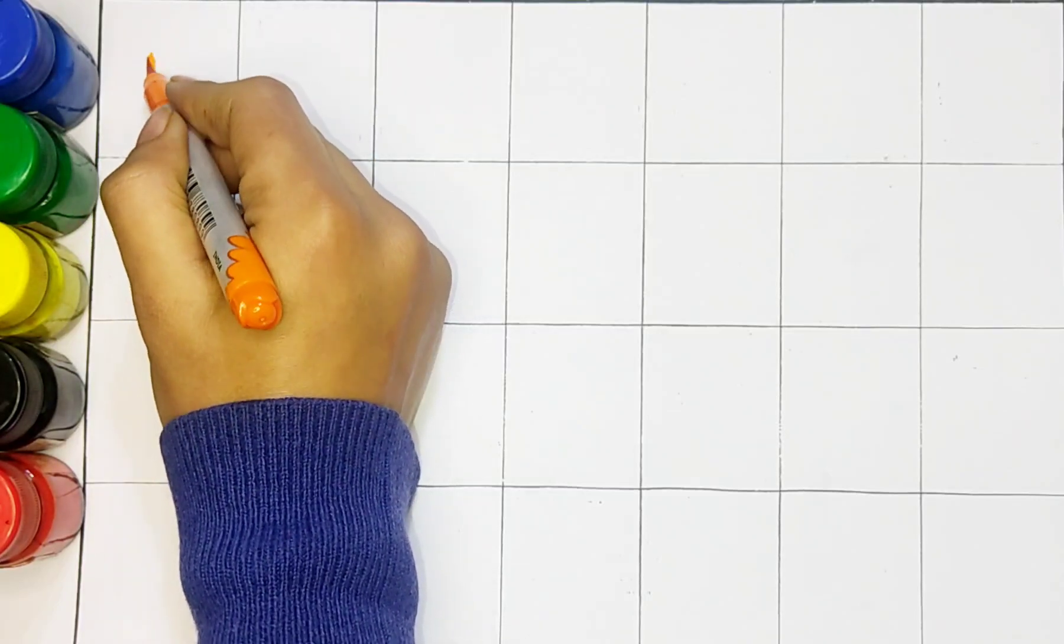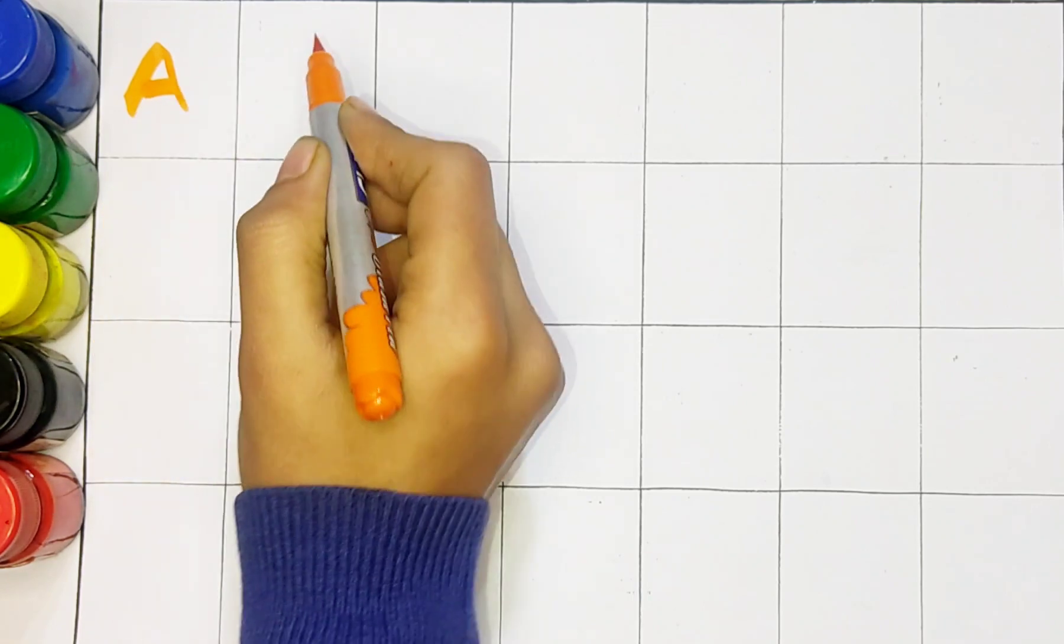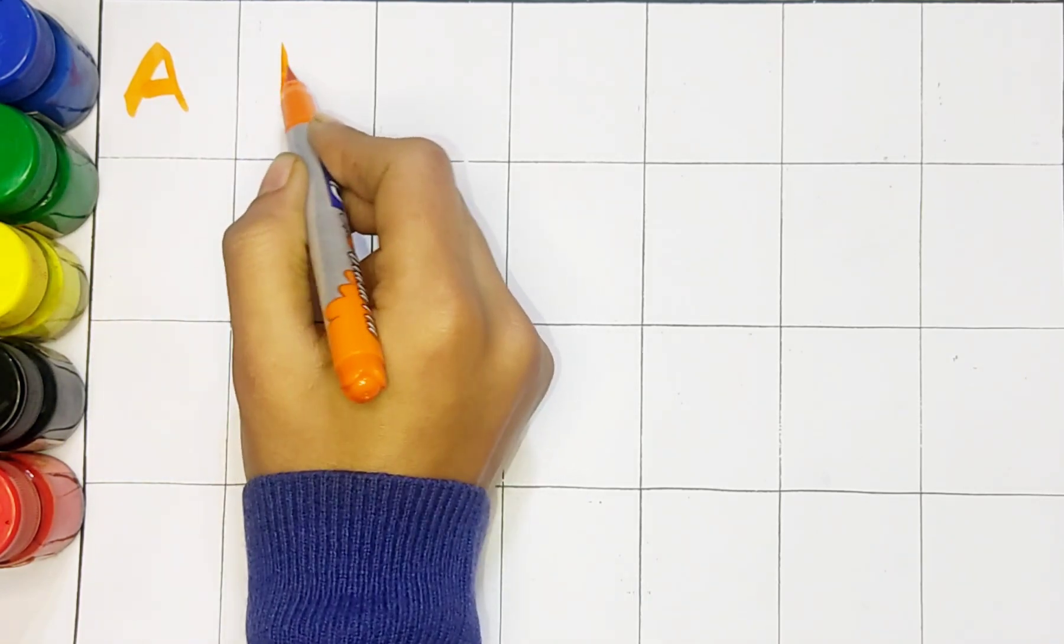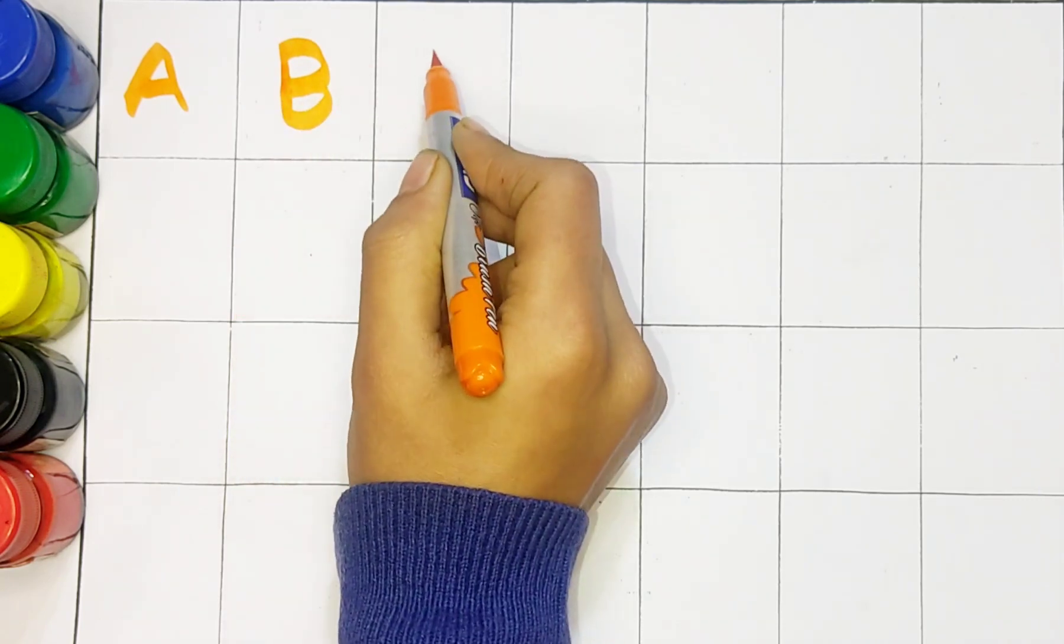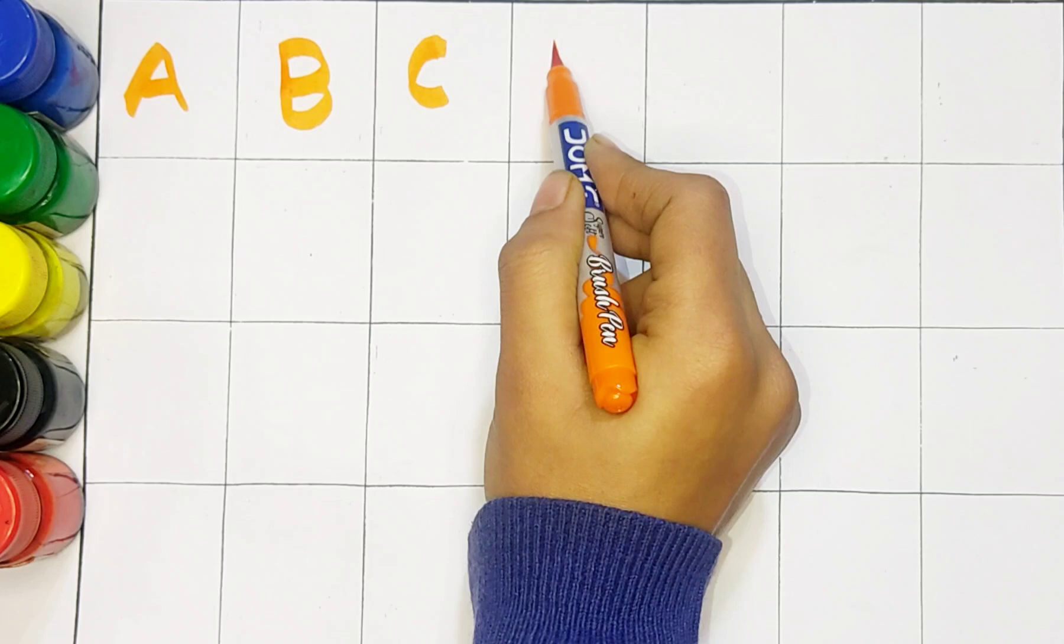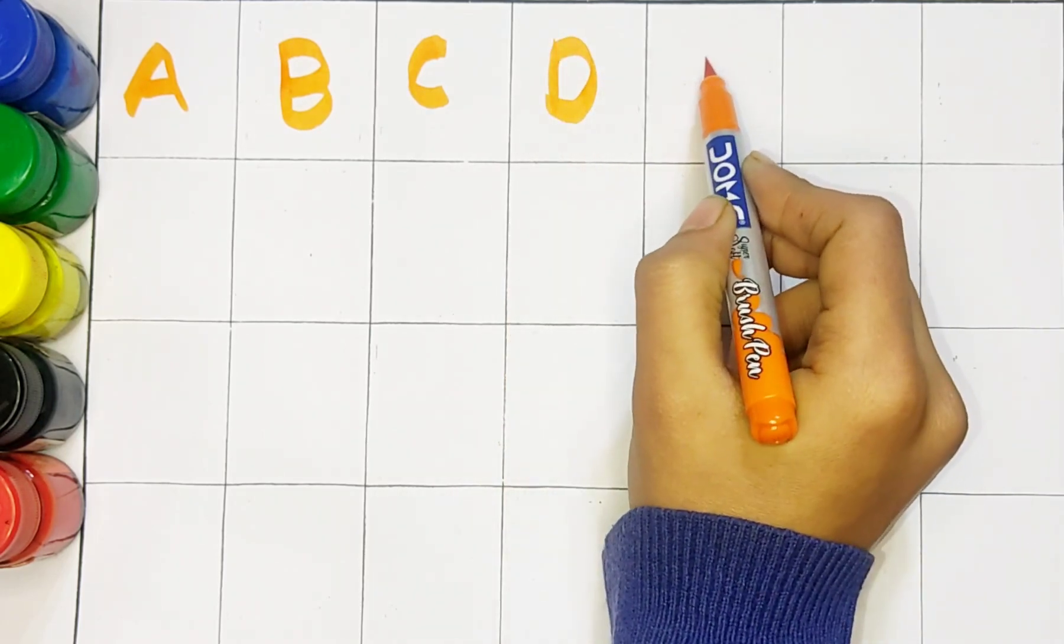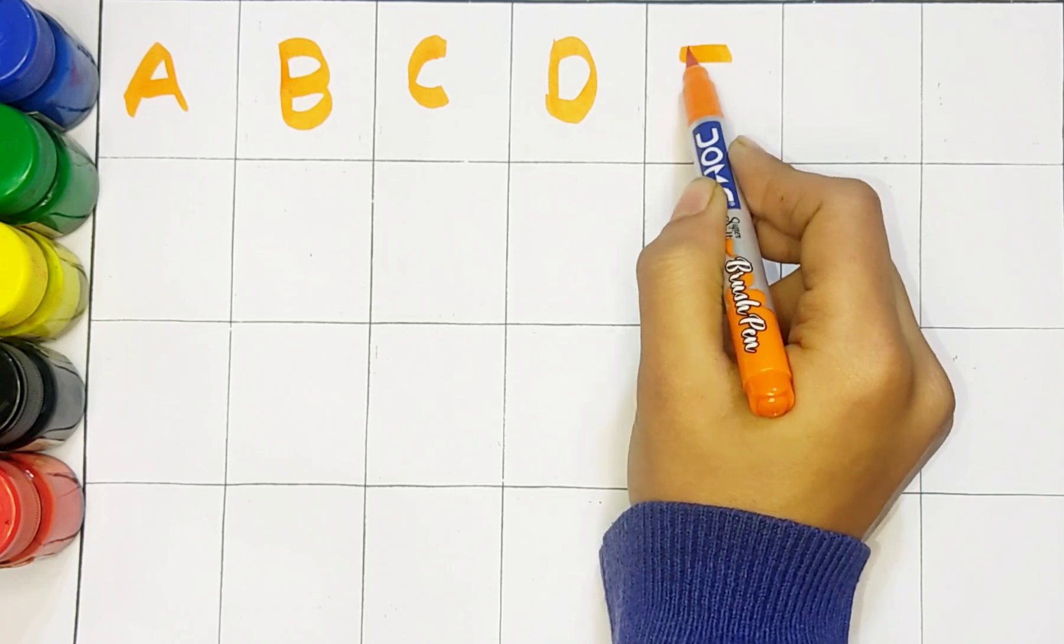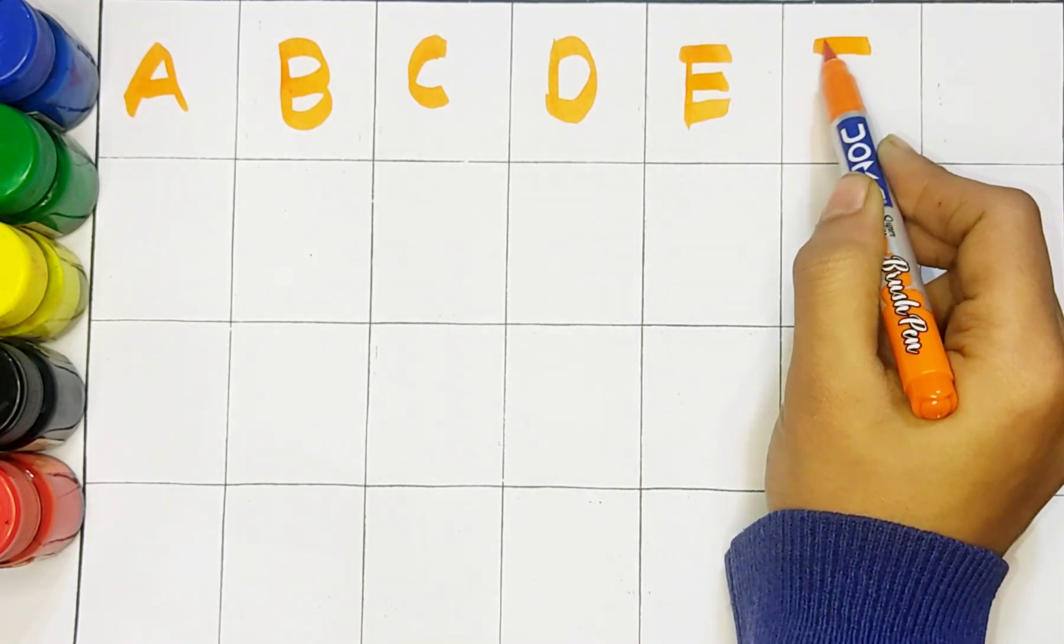A for apple. B for ball. C for cat. D for dog. E for eagle.